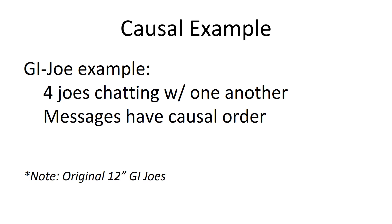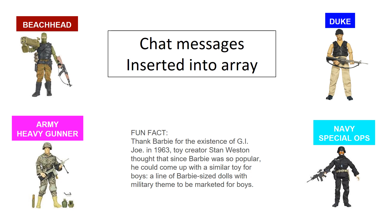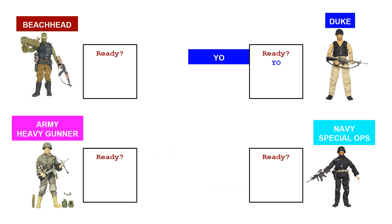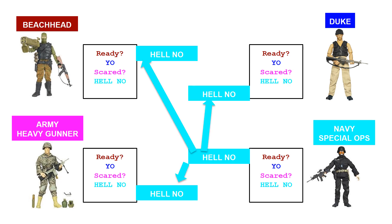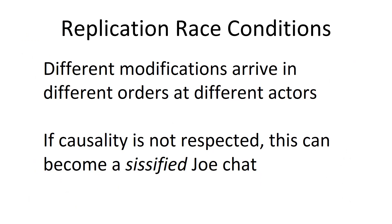These are the original 12-inch G.I. Joes. The messages they say will have a causal order, and we're going to mess that order up — it makes the Joes look bad. Fun fact: the maker of Barbie thought 'I'll militarize these and market them to boys' and he was right. The Joes insert their messages into an array. Beachhead asks if they're ready — replicated. Duke goes 'yo' — replicated. Army Heavy Gunner says 'scared' — replicated. Navy Special Ops says 'hell no' — replicated. Everyone is on the same page with the conversation: ready, yo, scared, hell no. That showed perfect replication with no race conditions, but there's no guarantee in a distributed environment.